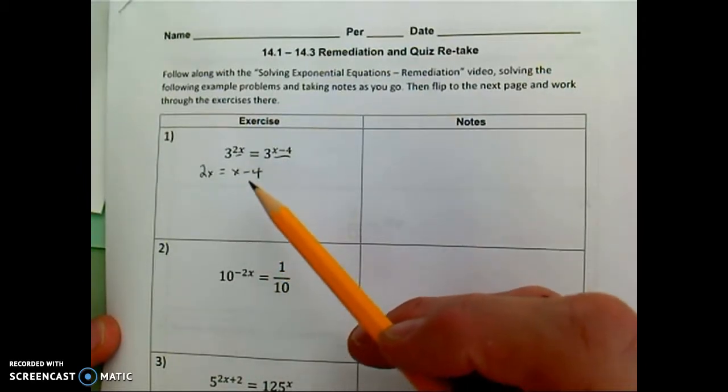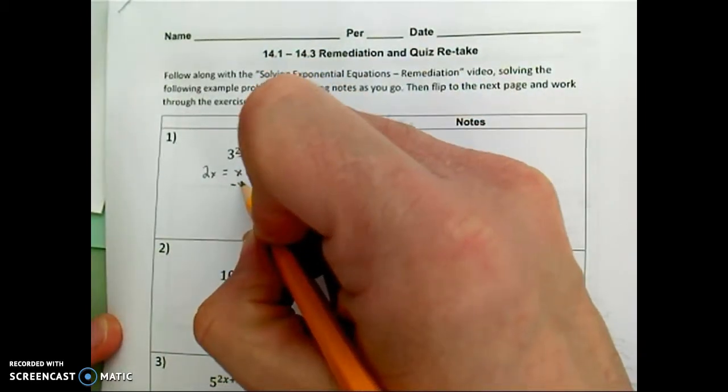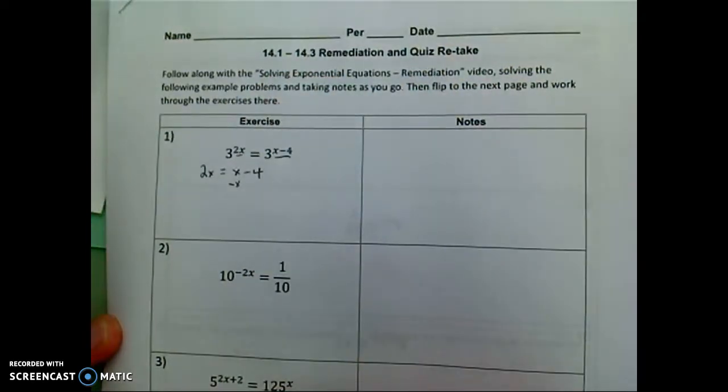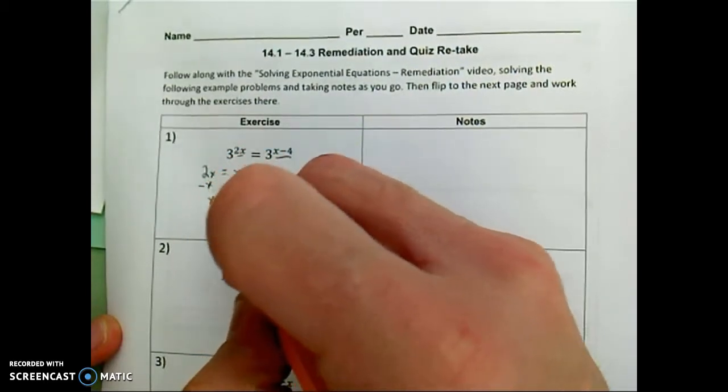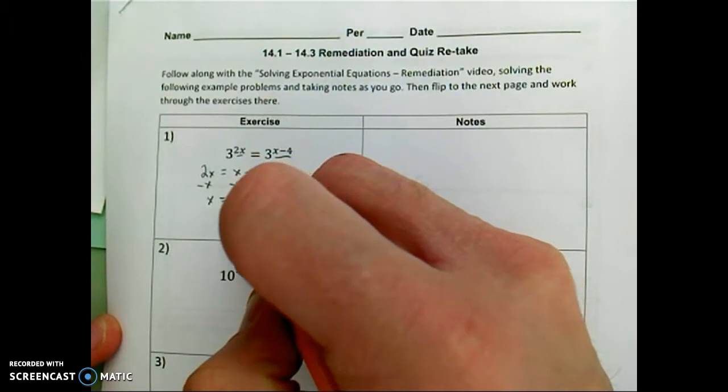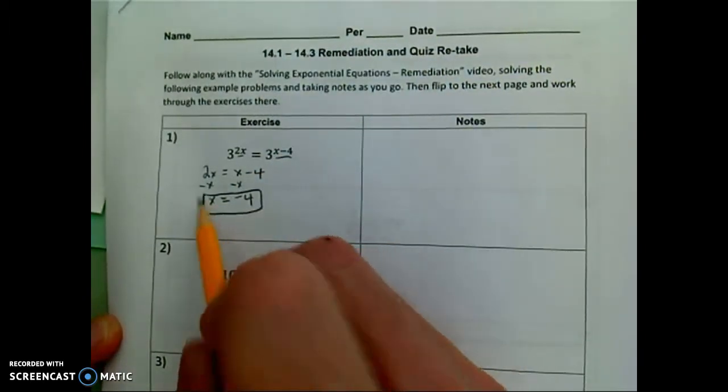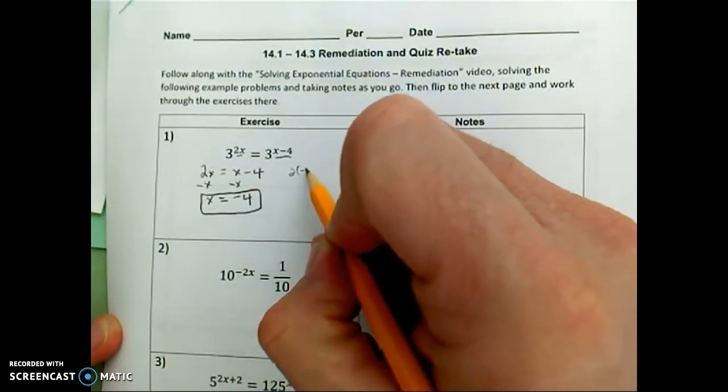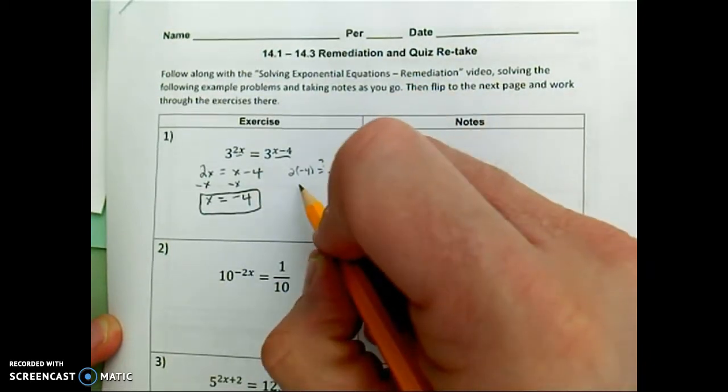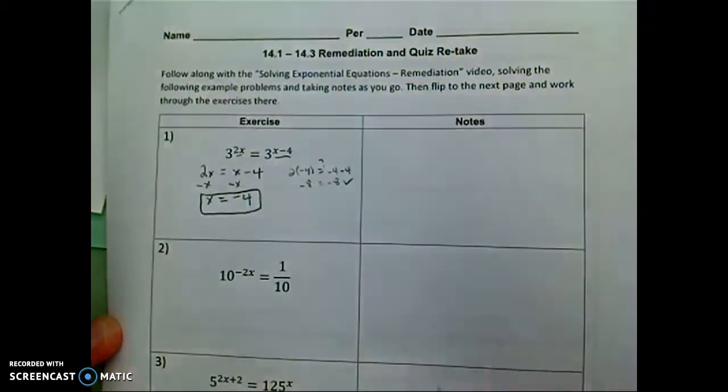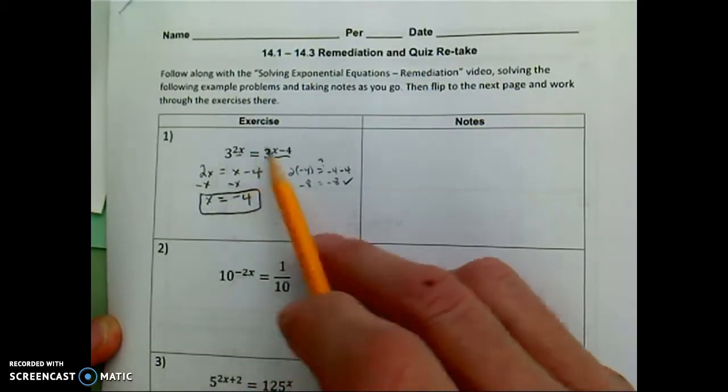And this is an equation that you've been solving since middle school. 2x equals x minus 4. So I have variables on both sides, so I need to go ahead and combine those. So minus x minus x. 2x minus 1x is x. x minus x is 0. And so x is equal to negative 4. I can go back and check this if I want. 2 times negative 4 should be equal to negative 4 minus 4. So negative 8 equals negative 8 and that checks. So I can see that negative 4 is the correct solution of this equation which means it makes this equation true.